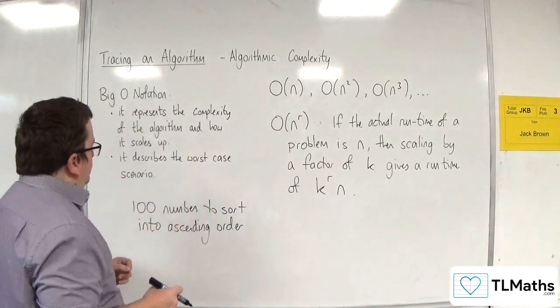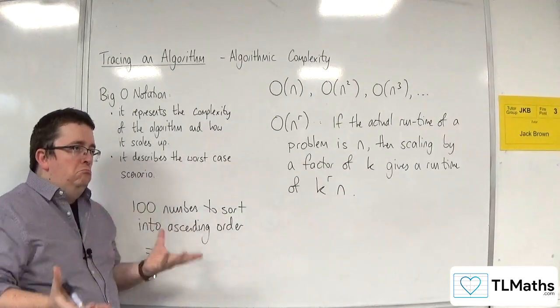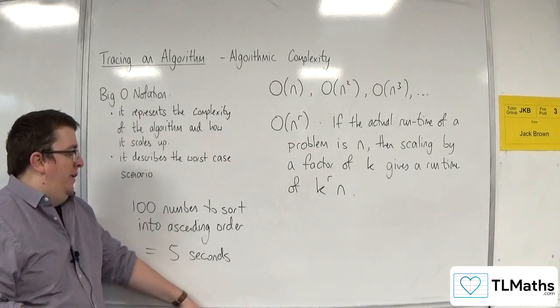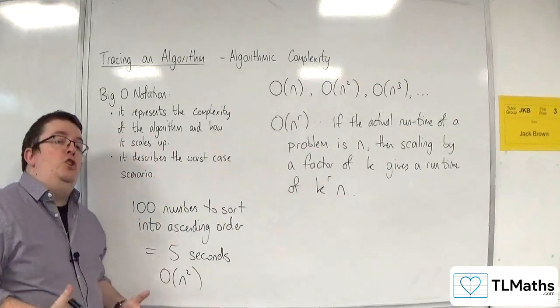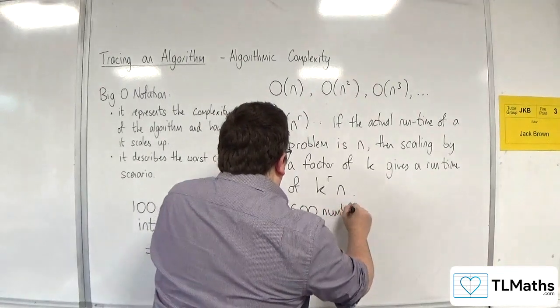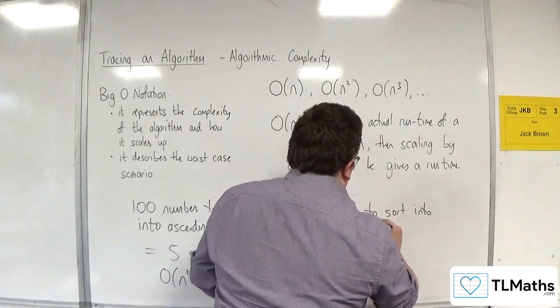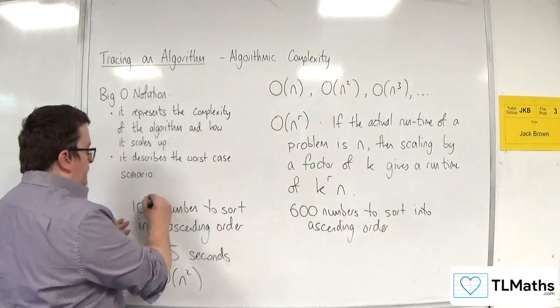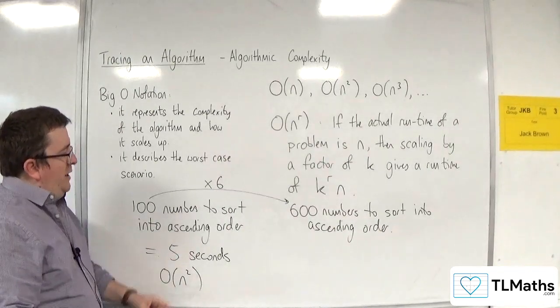So let's say, for example, we've got the 100 numbers to sort into ascending order, let's say I know that that takes 5 seconds. So I've got an algorithm where 100 numbers to sort into ascending order takes 5 seconds to do it, and let's say it's order of n squared. So that's the information I would have to be given. Then, let's say I've now got 600 numbers to sort into ascending order. How long is that going to take? Well, the actual problem is 6 times as large, because you've gone from the 100 numbers up to the 600 numbers.